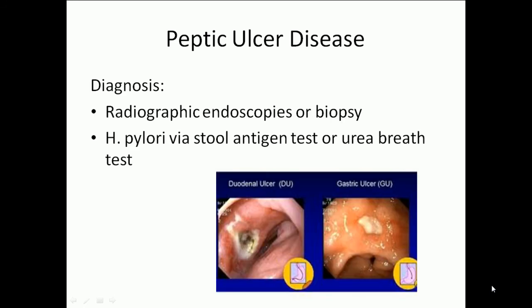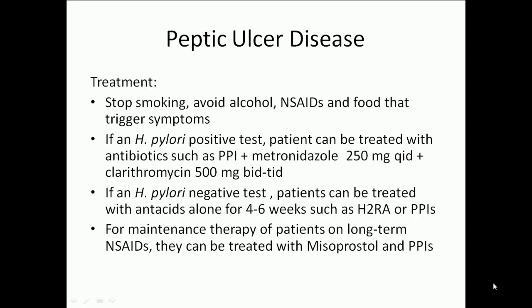Diagnosis can include radiographic imaging, endoscopy, or biopsy. H. pylori can also be detected through a stool antigen test or urea breath test.